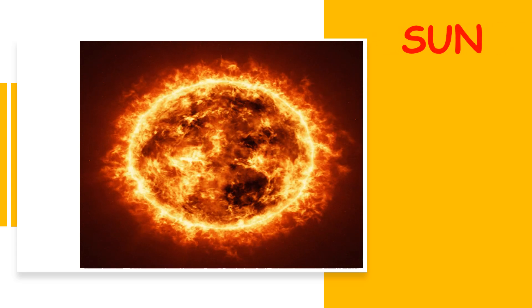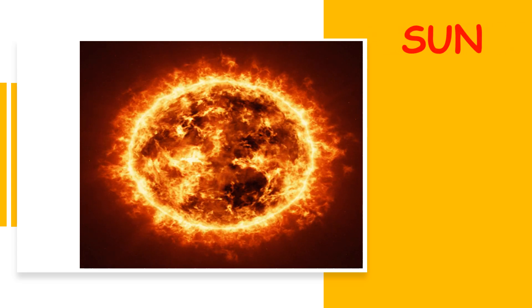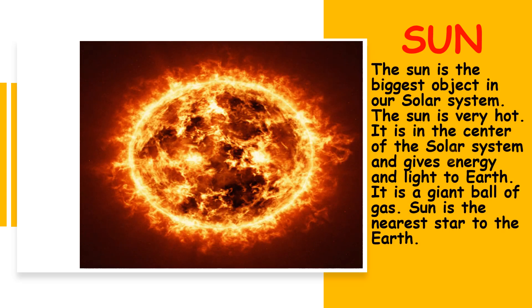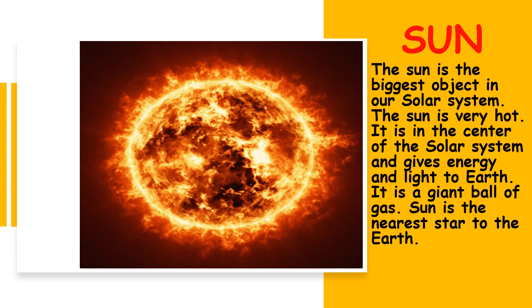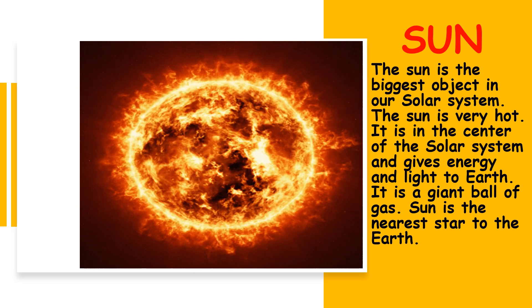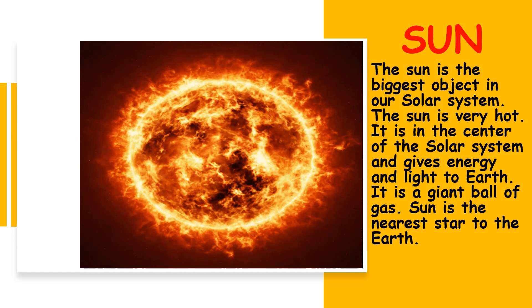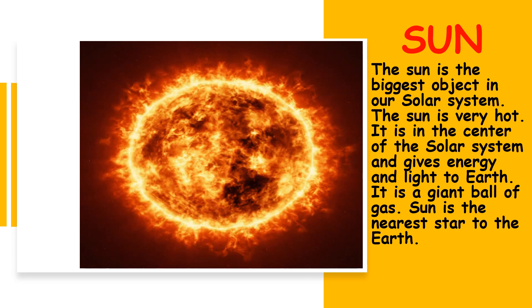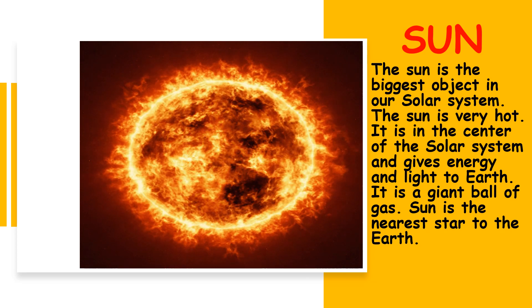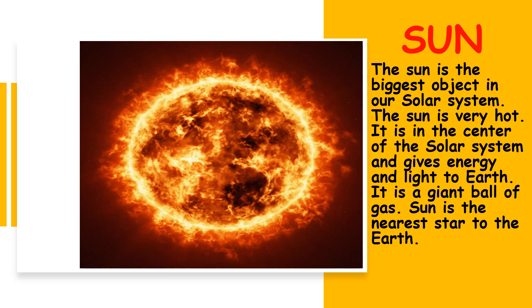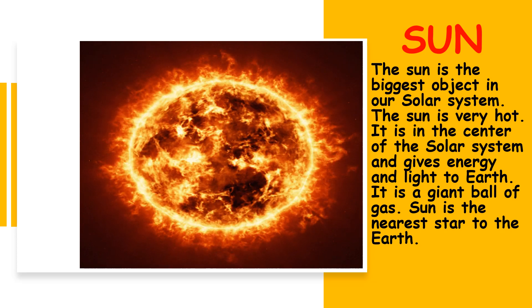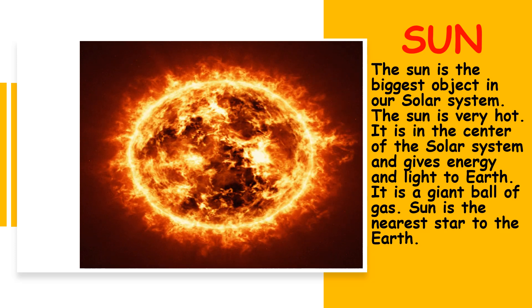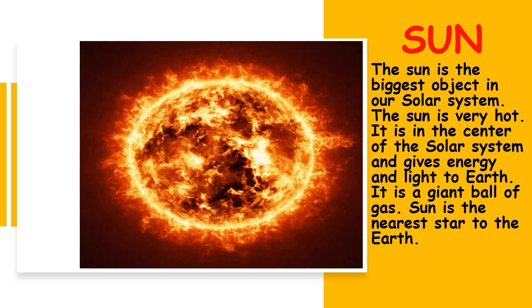What is that children? That's a burning sun. The sun is the biggest object in our solar system. The sun is very hot. It is in the center of the solar system and gives energy and light to Earth. It is a giant ball of gas. Sun is the nearest star to the Earth. Yes, you heard it right. Sun is a star.